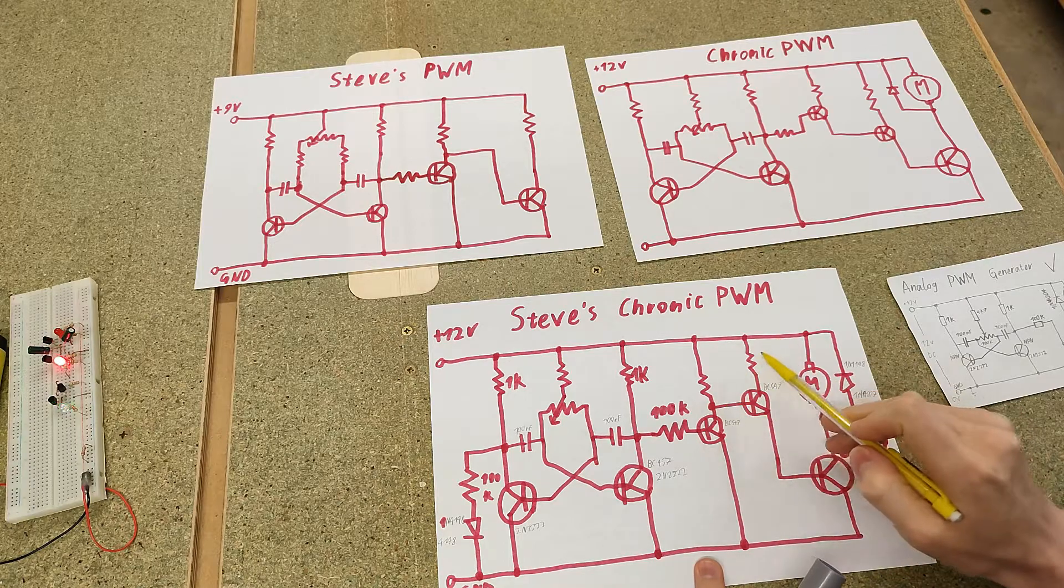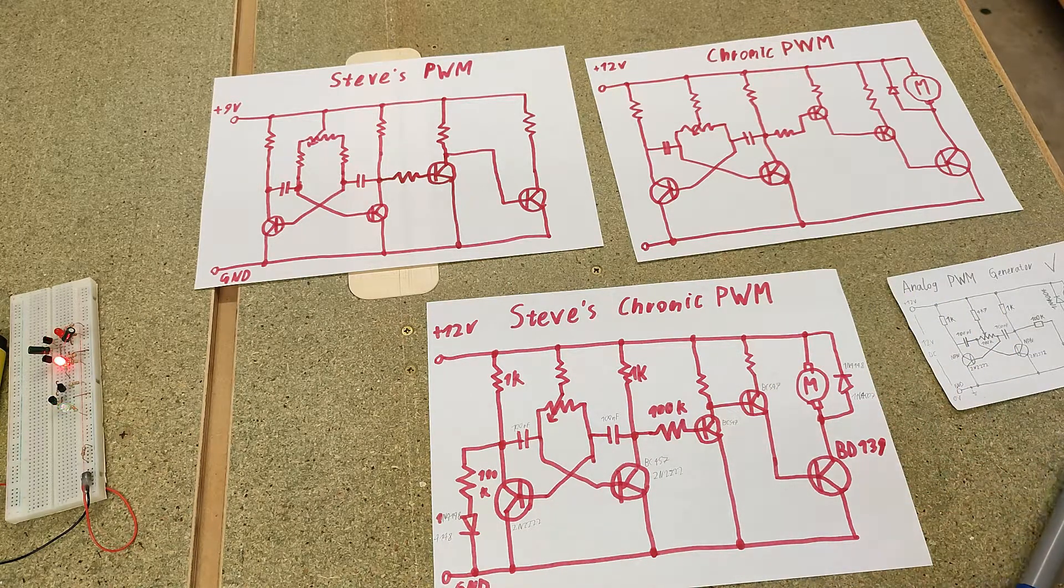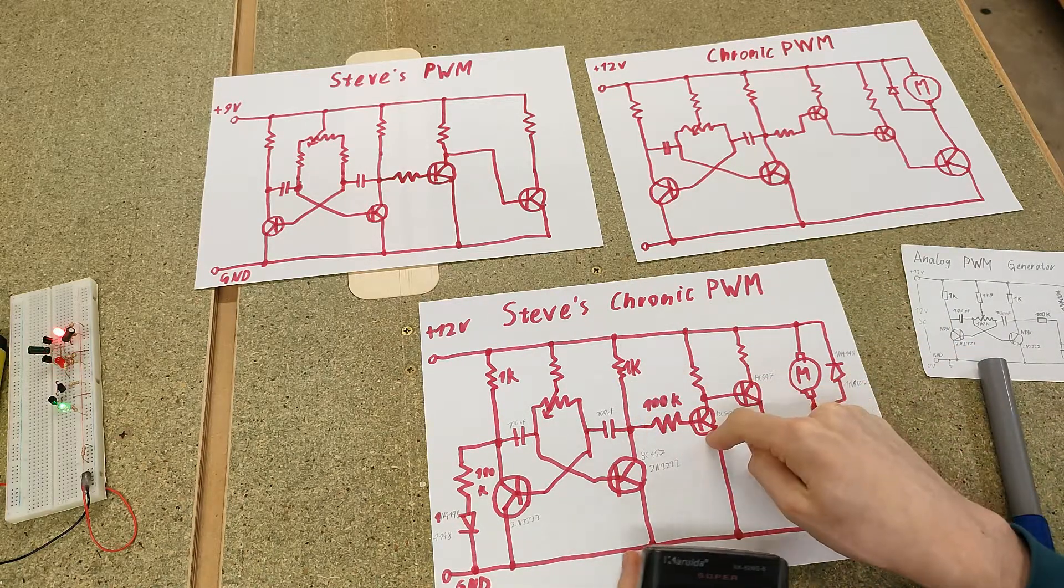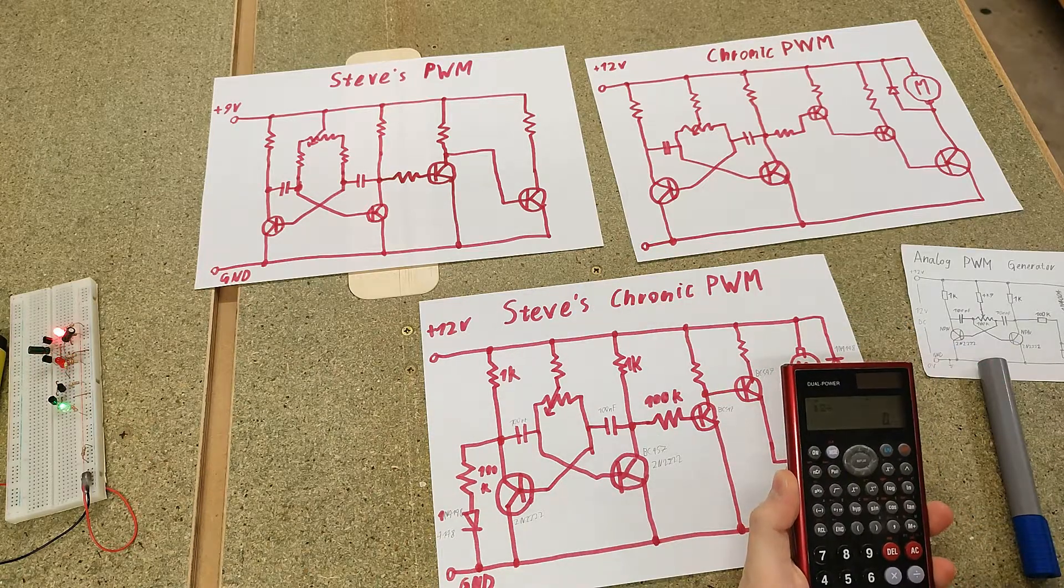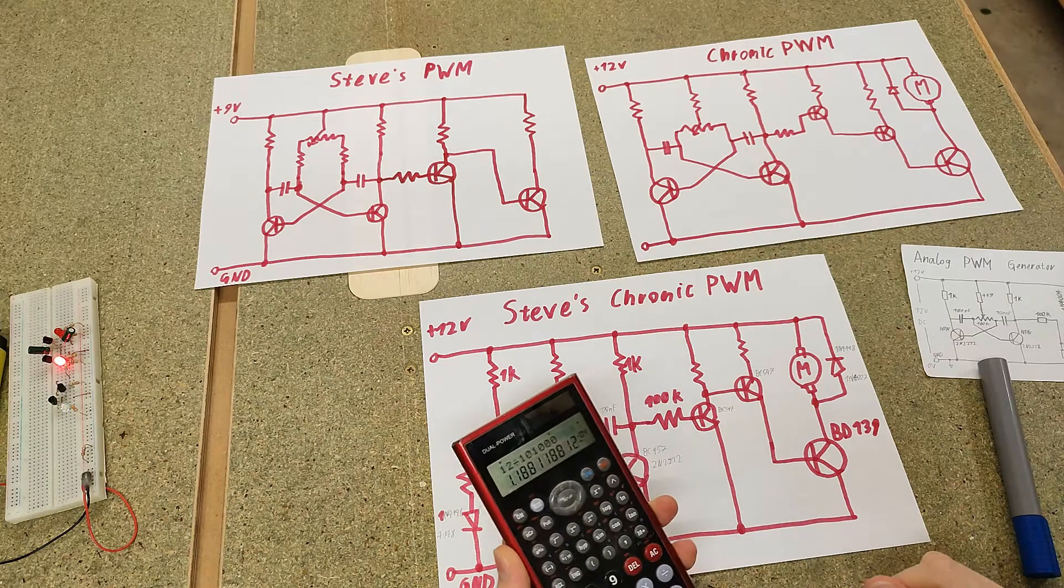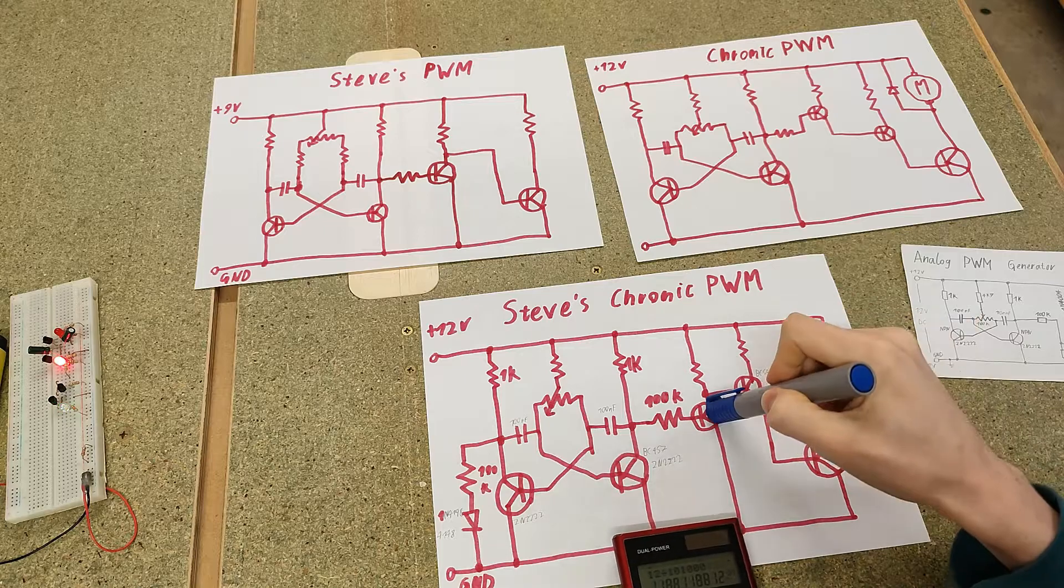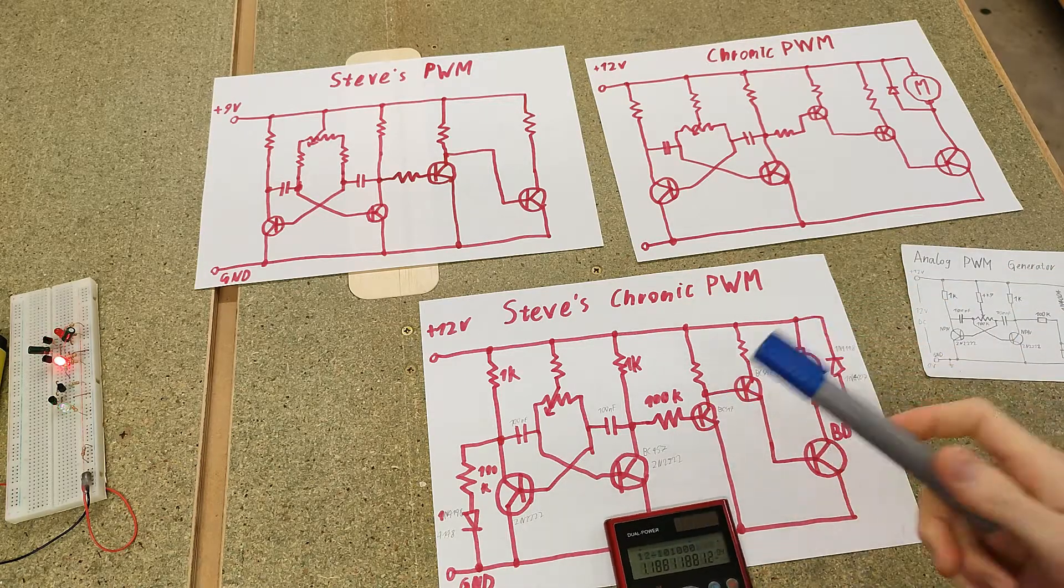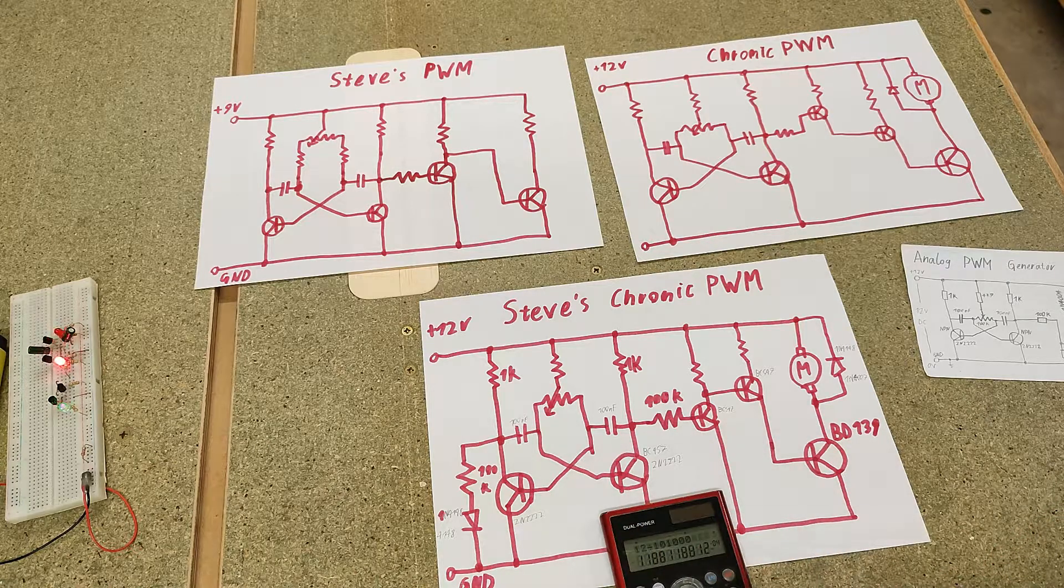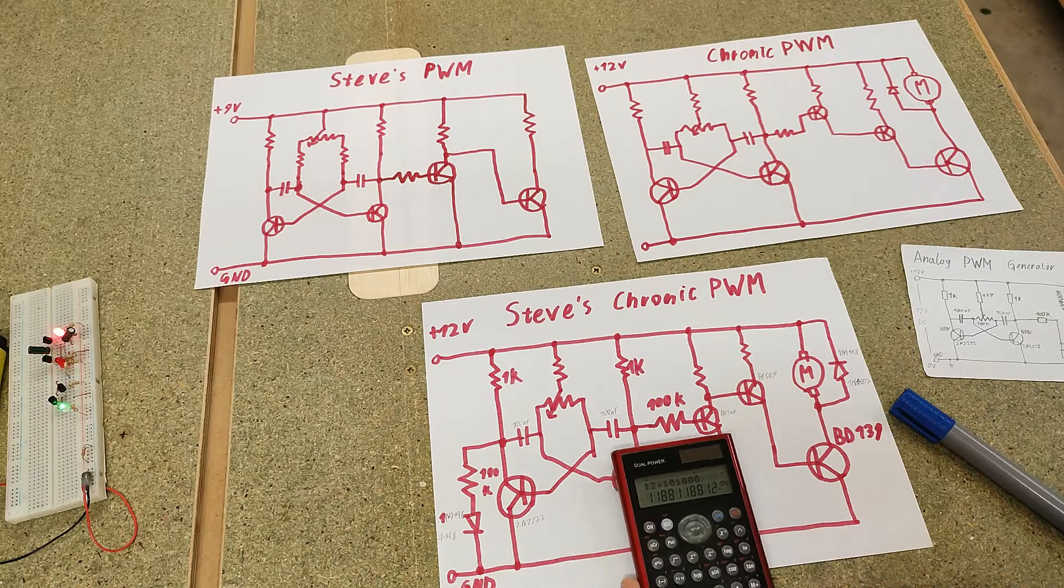And now these resistors are the only ones we actually need to calculate. So first of all, we need to know the current going into the base of this transistor. So we have 12V divided by 101K is 0.1mA basically. So actually what I learned from Steve is to fully saturate a transistor, you basically need to put in five times the base current that you would theoretically need with the given current gain.